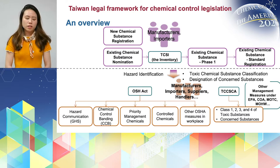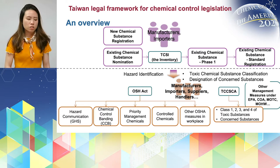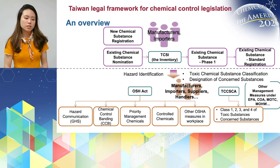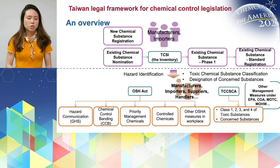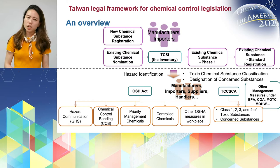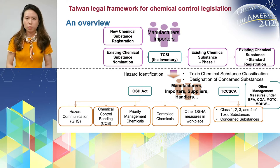The lower part of the slide is about key management. So if a chemical substance has been through registration, then based on hazard identification or specific direction or requirements by different agencies, there are probably some measures to be followed. For example, under OSHA, it has communication requirements — basically GHS requirements. It also has chemical control banding, abbreviated as CCP, and priority management chemicals and control chemicals.